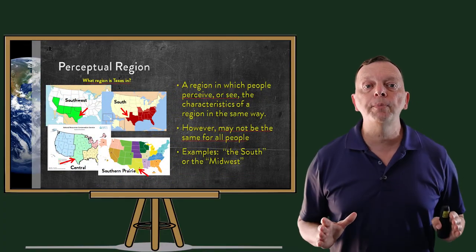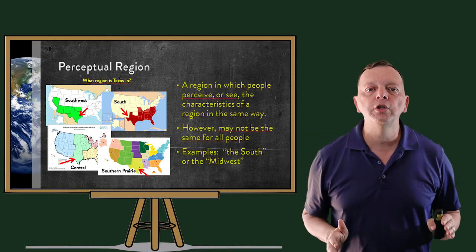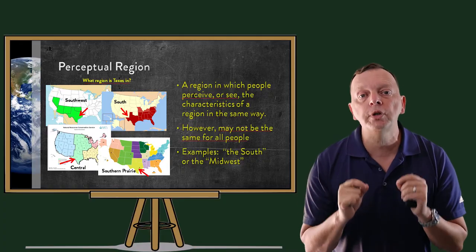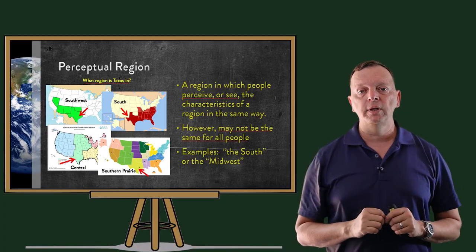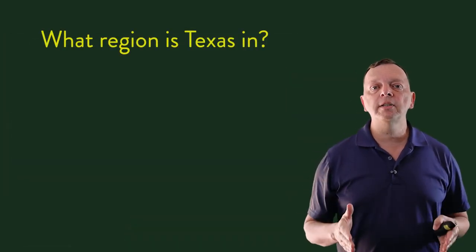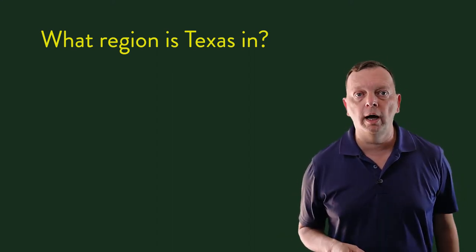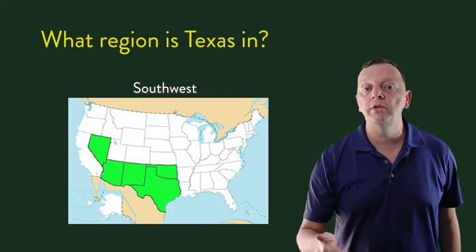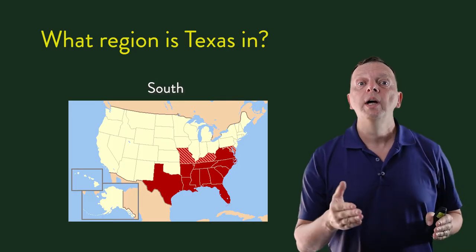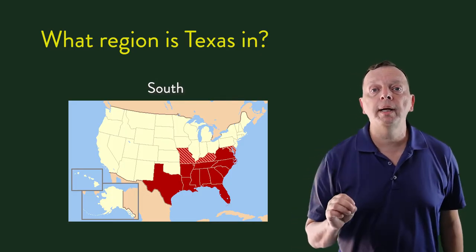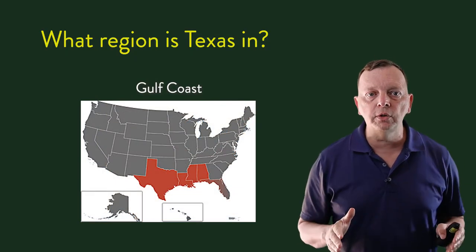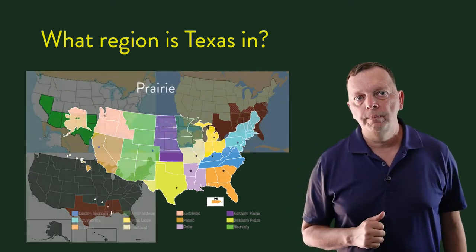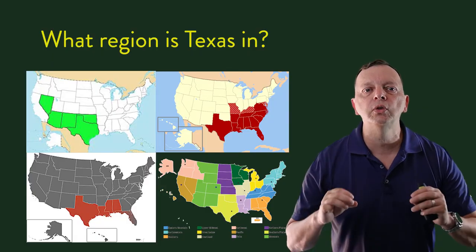Then there are perceptual regions. The term perceptual comes from the word perceive, which means to see. Essentially, a perceptual region is dependent upon how someone sees a location. Unlike a formal region, perceptual regions are determined by how a person wants to see a place or what story they want to tell. Take Texas, for example. Texas can be described as being in the American Southwest because of its climate, its location along the Mexican border, and its immigrants similar to other states in that region. A historian studying the Civil War would call Texas a southern state. A government agency tracking hurricanes puts Texas in the Gulf Coast region, and the Department of Agriculture puts Texas in the Prairie region for its research. So what region Texas is in is fully dependent upon how people want to see Texas for their purposes.